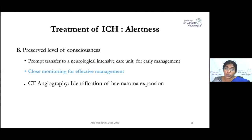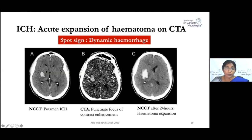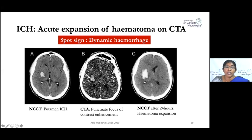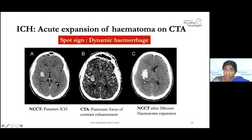To detect early hematoma expansion, a CT angiogram should be performed. If it shows a tiny punctate focus of contrast enhancement within the hematoma — called the 'spot sign' — this indicates a dynamic, actively expanding hemorrhage. Monitoring after 24 hours with non-contrast CT without medication would show hematoma expansion in such patients.